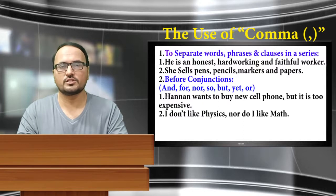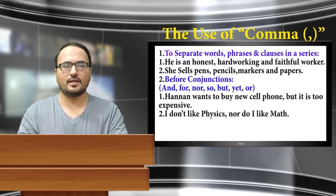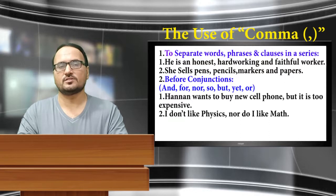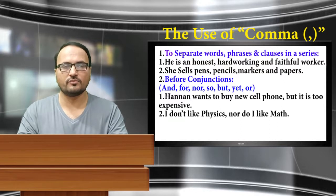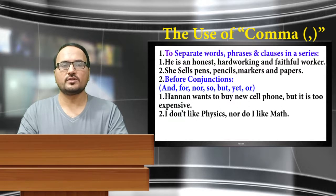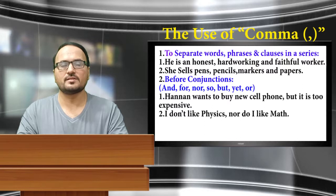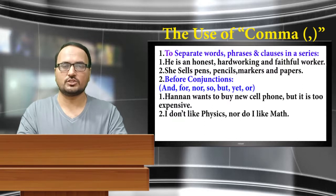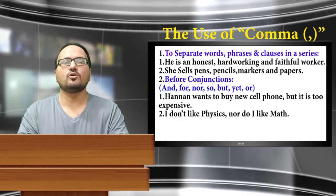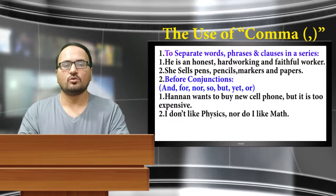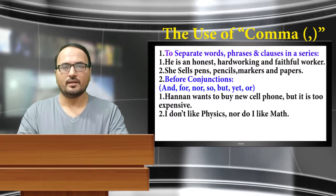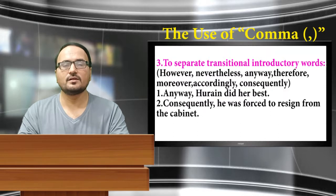The second use of comma: it is used before conjunctions — and, for, nor, so, but, yet, or. Example one: Hanan wants to buy a new cell phone, but it is too expensive. In this sentence, 'but' is a conjunction. Example two: I don't like physics, nor do I like math. In this sentence, 'nor' is a conjunction.